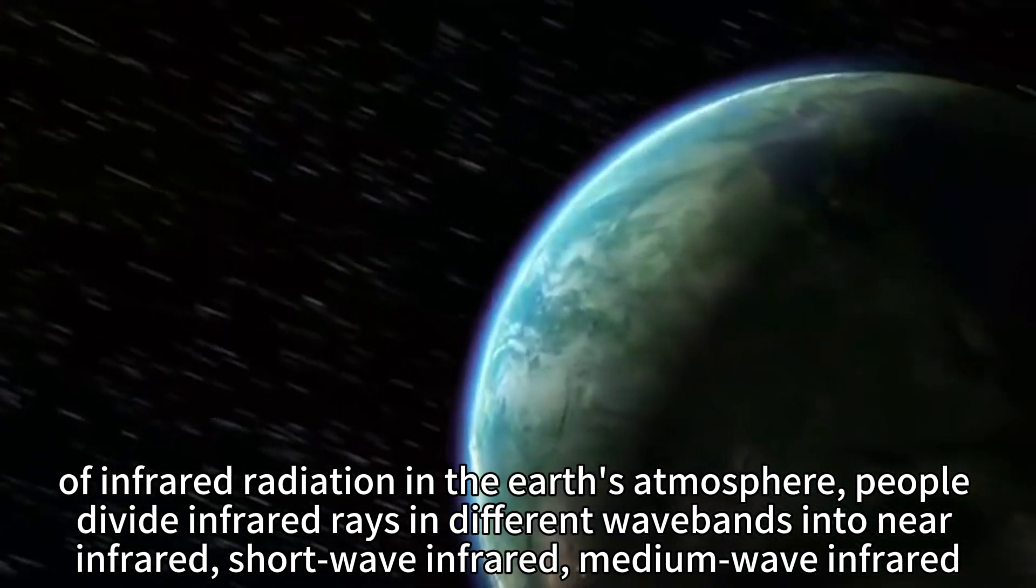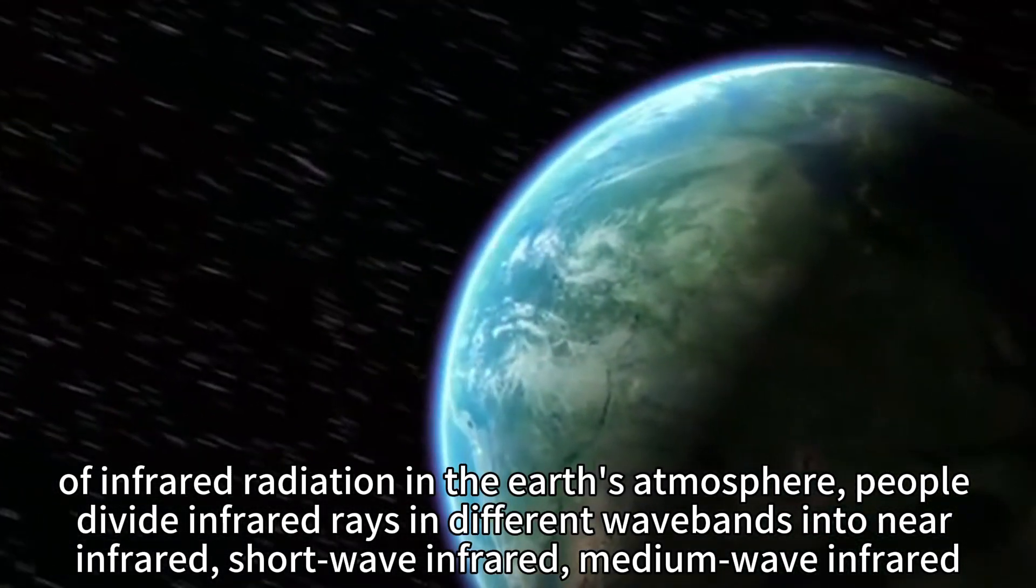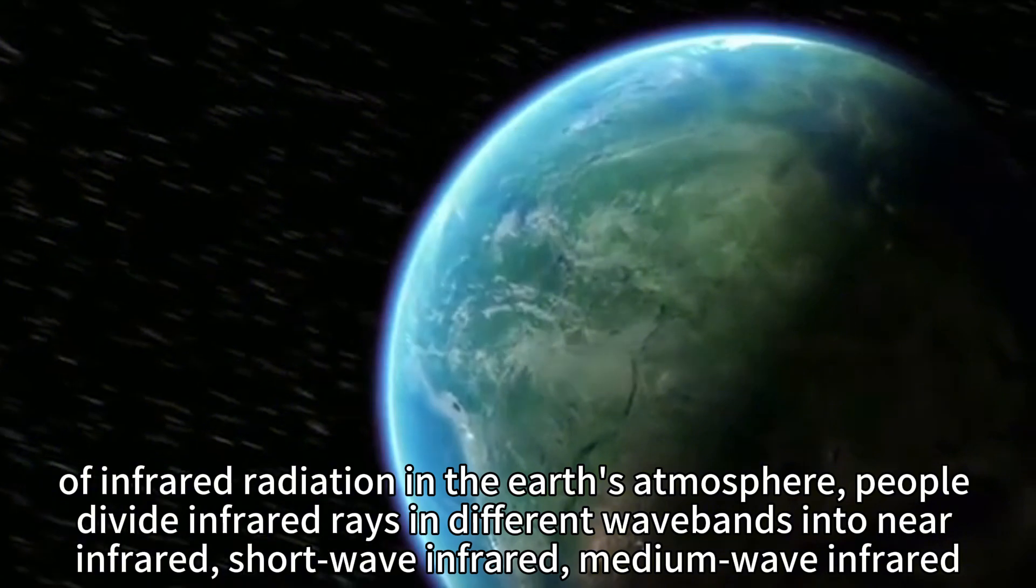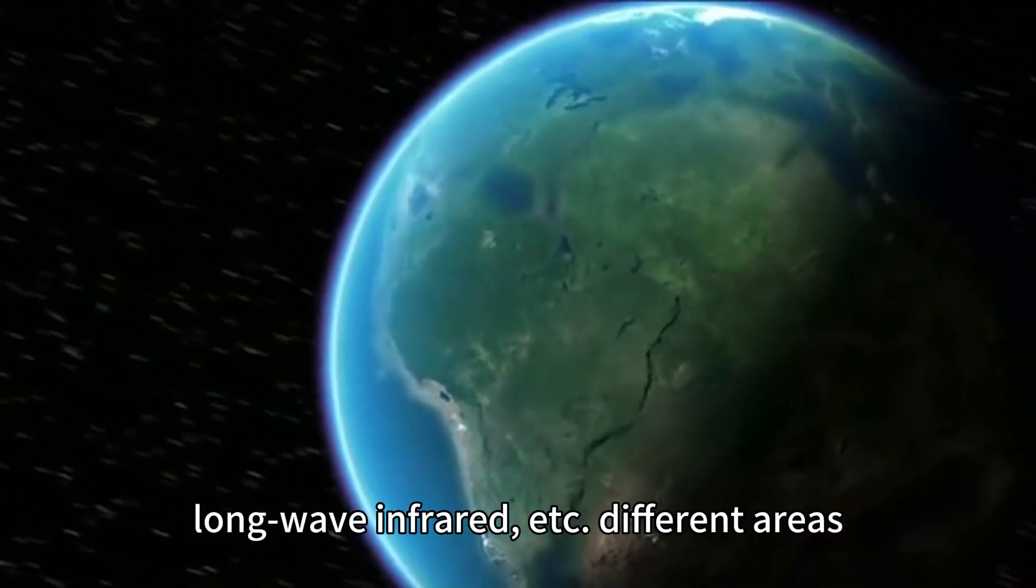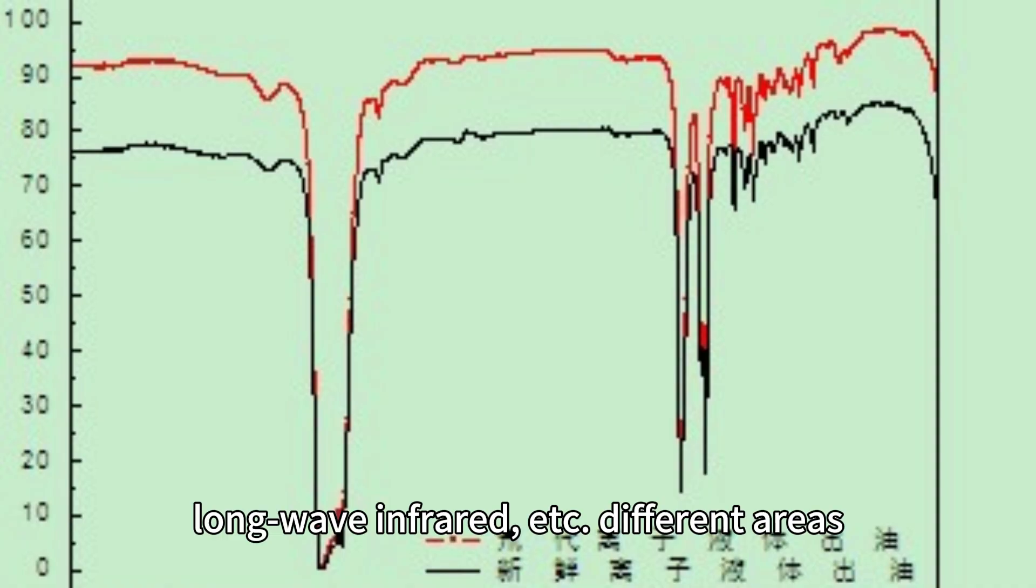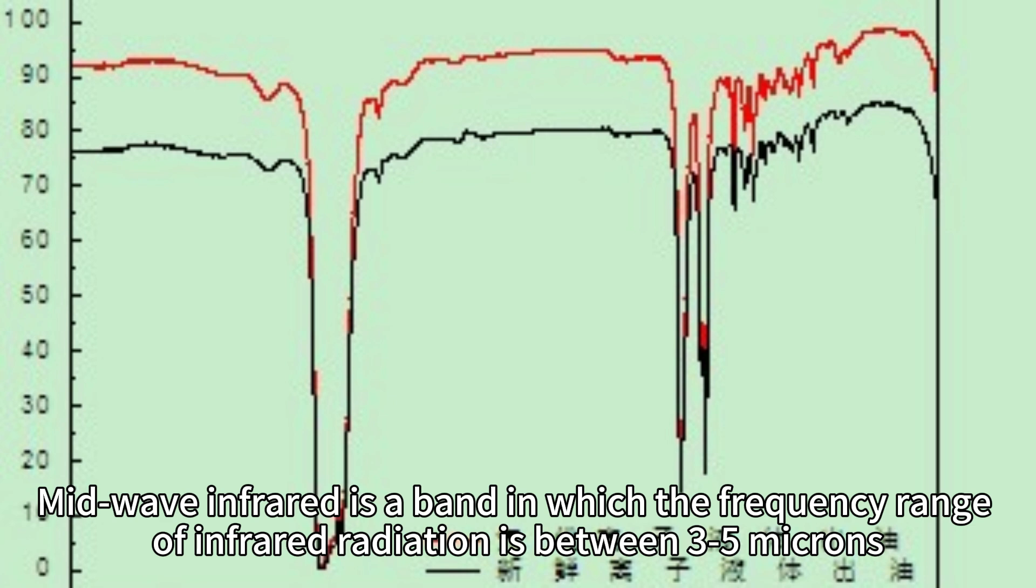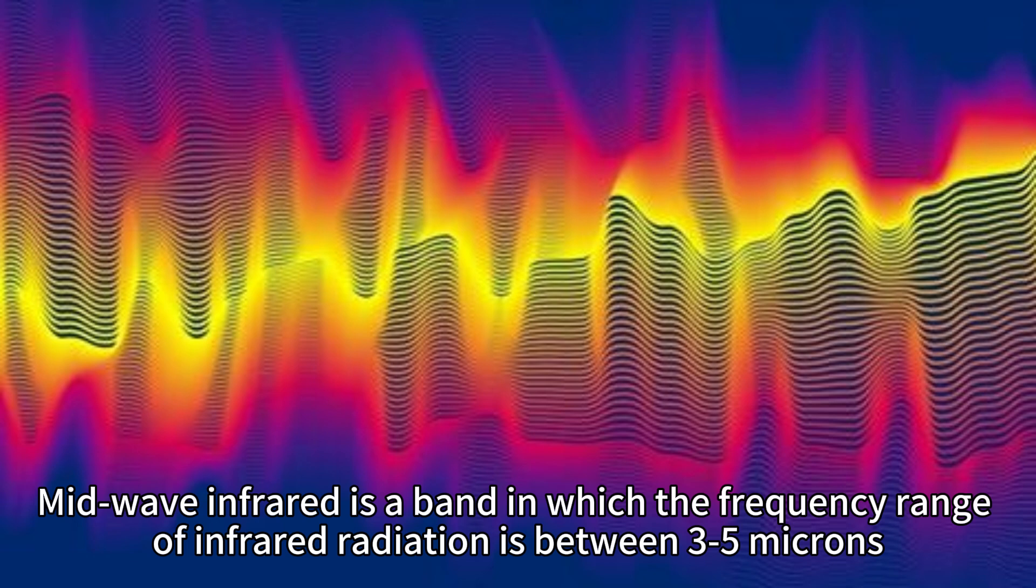People divide infrared rays in different wave bands into near-infrared, shortwave infrared, medium-wave infrared, long-wave infrared, and other different areas. Mid-wave infrared is a band in which the frequency range of infrared radiation is between 3 to 5 microns.